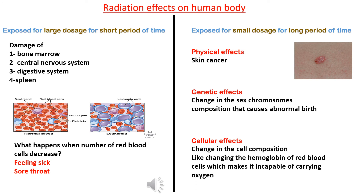Radiation effects on the human body: Exposure to a large dose for a short period of time causes damage to the bone marrow, central nervous system, digestive system, and spleen. Exposure to a small dose for a long period of time causes physical effects such as skin cancer, genetic effects including changes in sex chromosome composition that cause abnormal births, and cellular effects involving changes in cell composition.